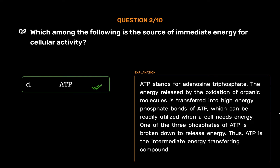ATP stands for adenosine triphosphate. The energy released by the oxidation of organic molecules is transferred into high-energy phosphate bonds of ATP, which can be readily utilized when a cell needs energy. One of the three phosphates of ATP is broken down to release energy. Thus, ATP is the intermediate energy transferring compound.